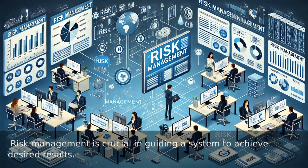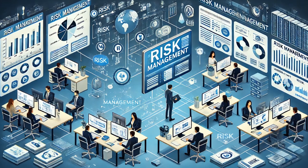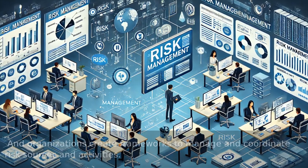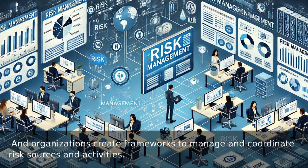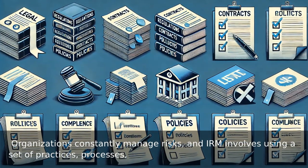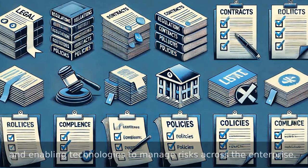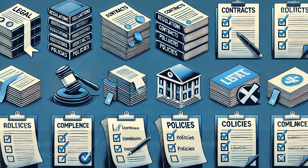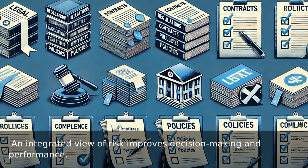Risk management is crucial in guiding a system to achieve desired results. It involves various elements, and organizations create frameworks to manage and coordinate risk sources and activities. Organizations constantly manage risks, and IRM involves using a set of practices, processes, and enabling technologies to manage risks across the enterprise. An integrated view of risk improves decision-making and performance.